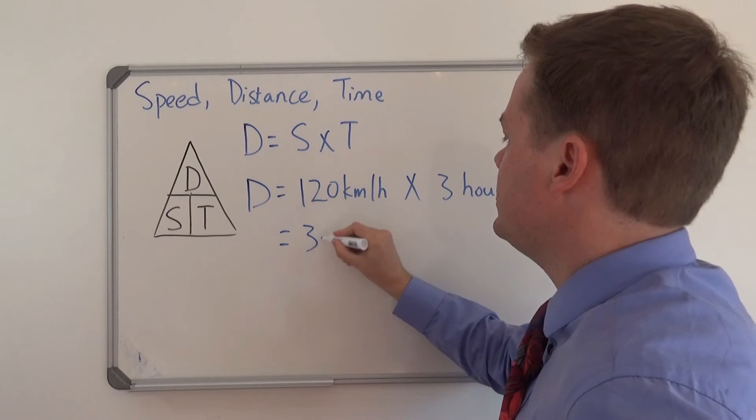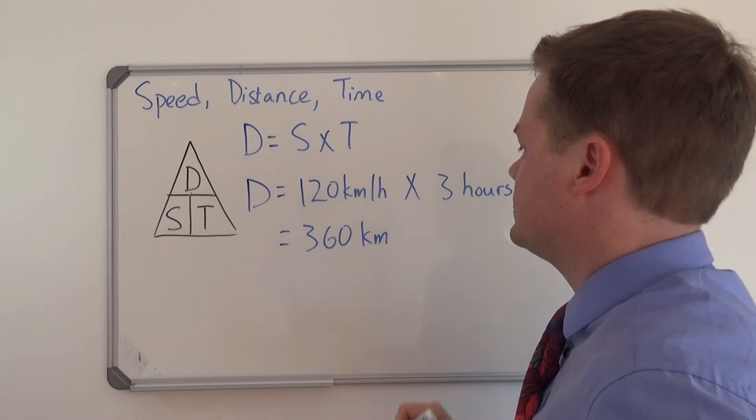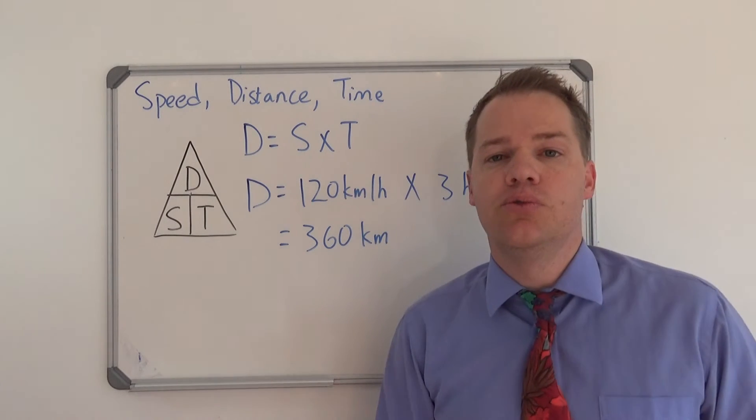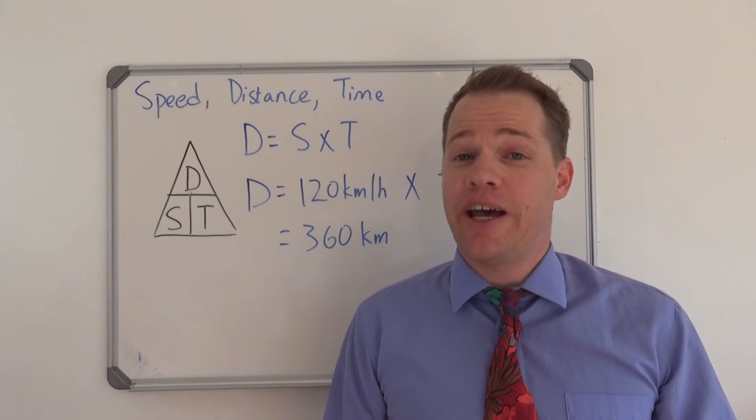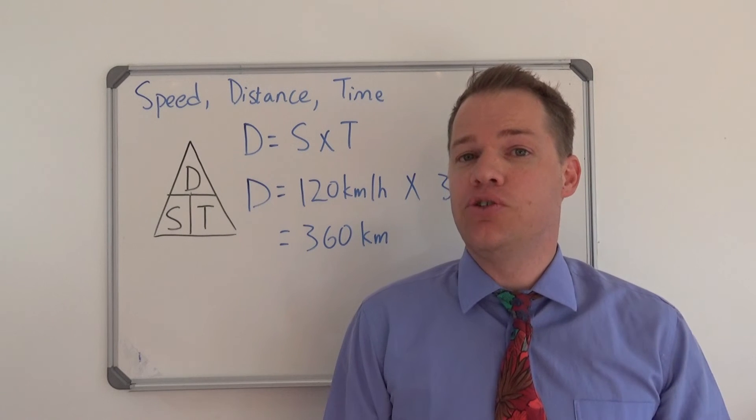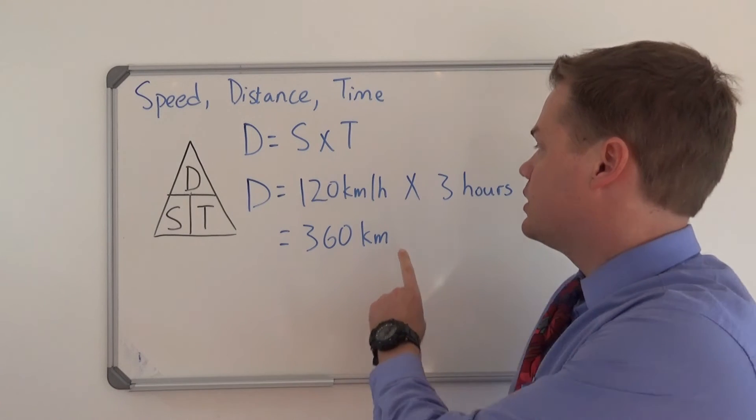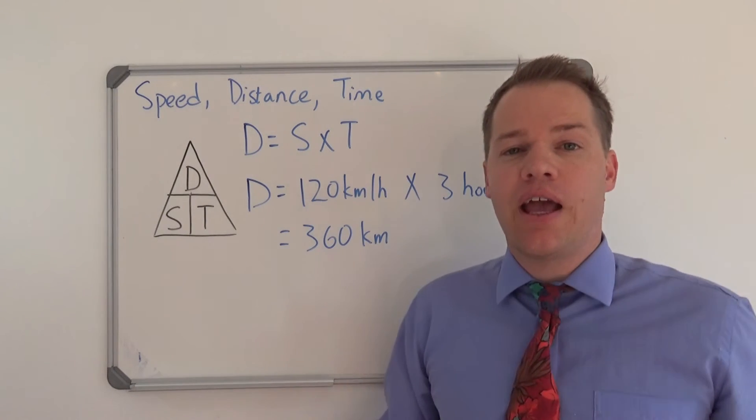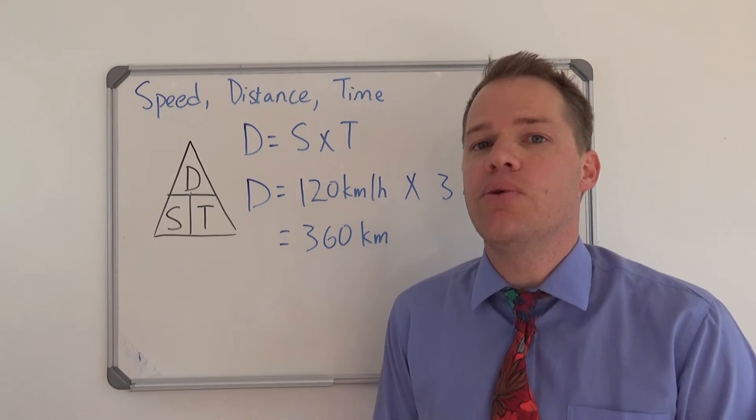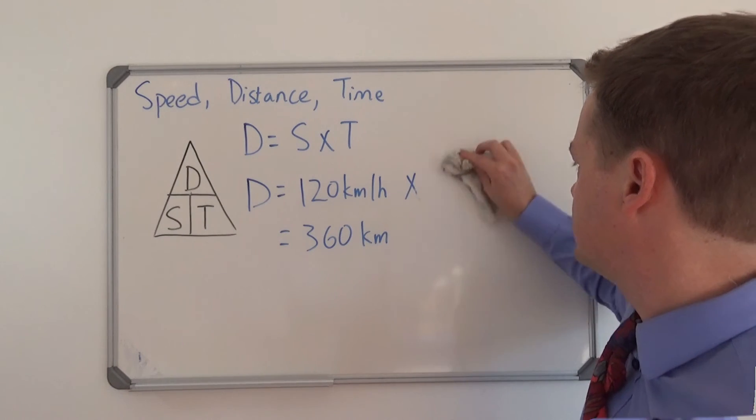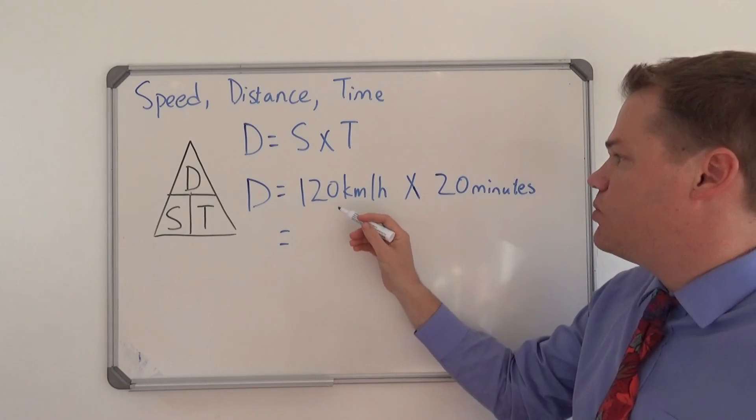This is the distance you would cover. Now I have to do one more example just to show you how to calculate this if you travel for let's say only 20 minutes instead of three hours. So we know that we can't say 120 times 20, that wouldn't make sense.